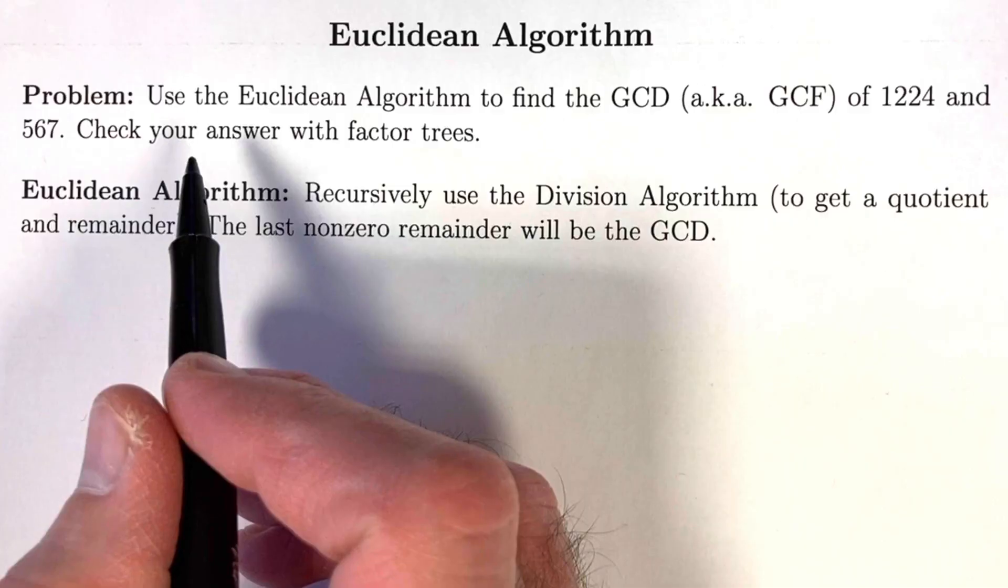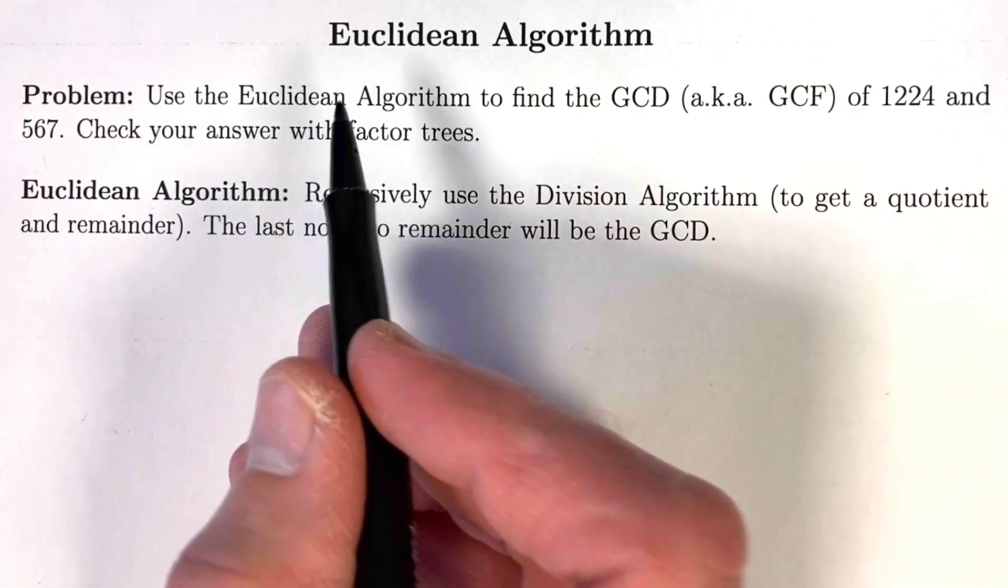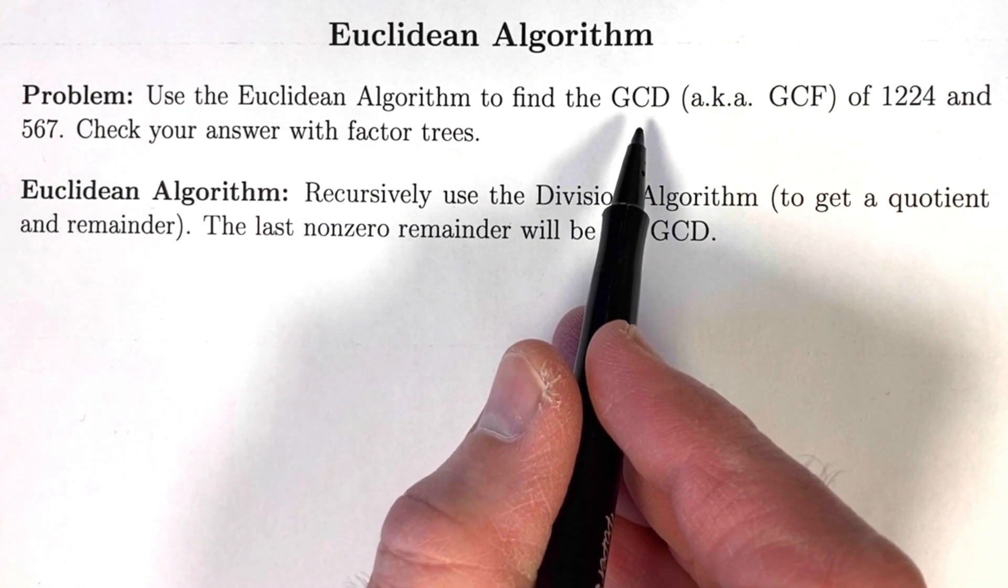The Euclidean algorithm is an ancient method to find the greatest common divisor of two whole numbers. This problem says to use the Euclidean algorithm to find the GCD, greatest common divisor.